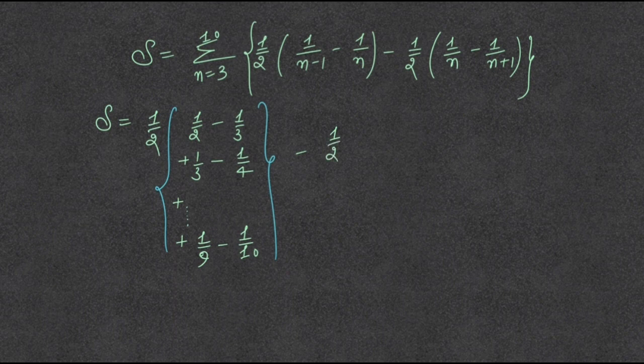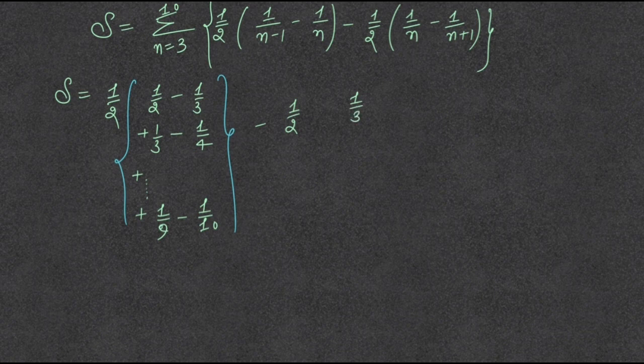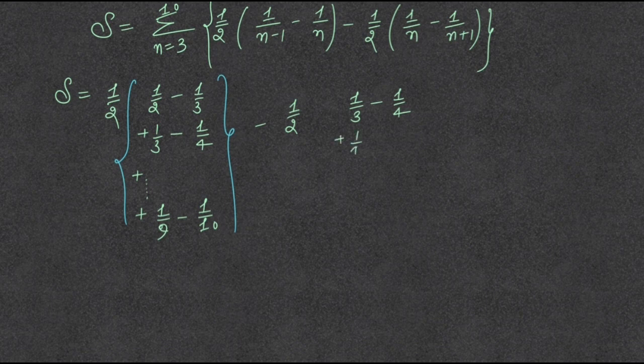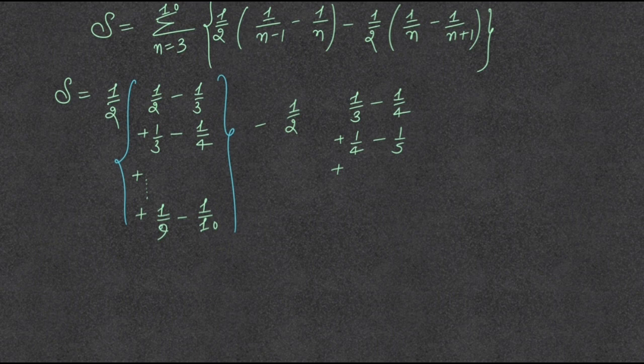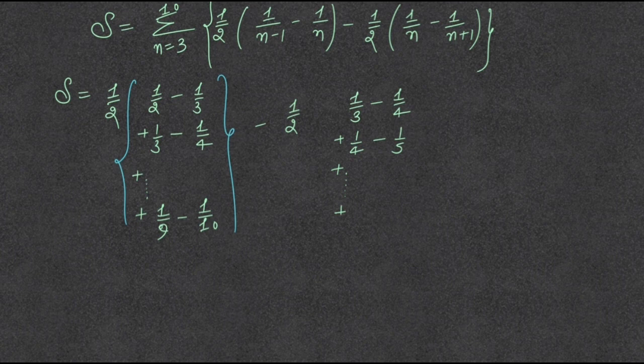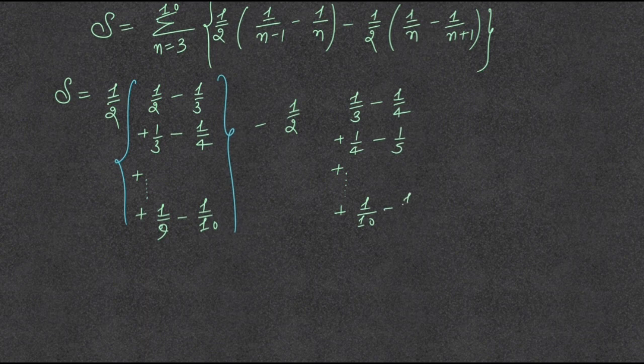Second bracket, plus 1 by 3. Value starts from 3, it becomes 1 upon 3 minus 1 upon 4, plus 1 upon 4 minus 1 upon 5. It can go on and for 10 it becomes 1 upon 10 minus 1 upon 11.